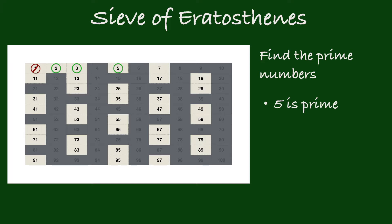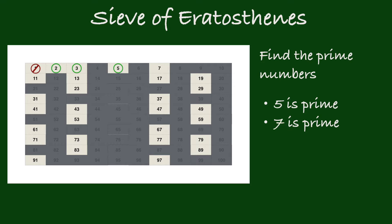Circle 5 and shade all the multiples of 5. The next unshaded number is 7 — circle 7 and shade all the multiples of 7. Note that 9 is not a prime number since it can be expressed as 3 times 3.